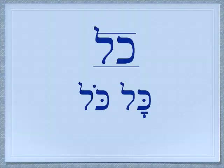The two letters we're looking at today are Kaf and Lamed. Together they spell a word which is sometimes spelled with a kamatz and sometimes with a cholem, but it's always pronounced kol. It's never pronounced kal — it's always pronounced kol regardless of the vowel.